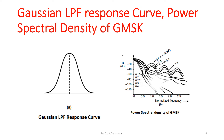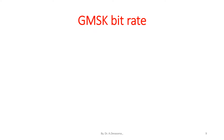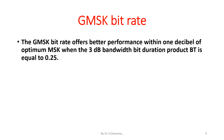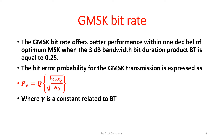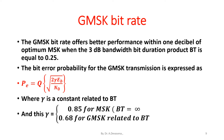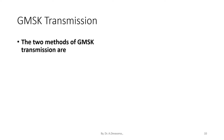The Gaussian LPF response curve and the power spectral density of GMSK are shown in diagrams. The GMSK bit rate offers better performance within one decibel of optimum MSK when the 3 dB bandwidth-bit duration product BT equals 0.25. The bit error probability for GMSK transmission is expressed as Pe = Q(√(2γ × Eb/N0)), where γ is a constant related to BT. The γ value is 0.85 for MSK and 0.68 for GMSK.